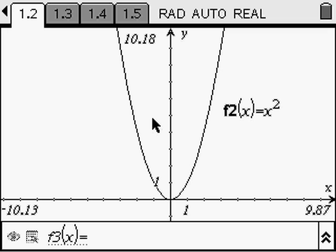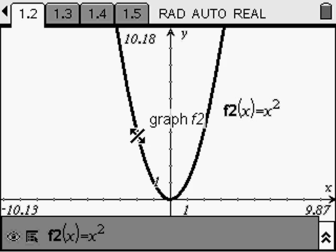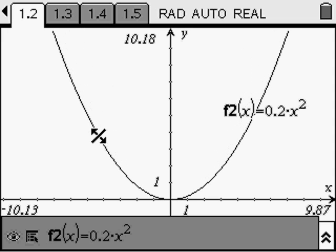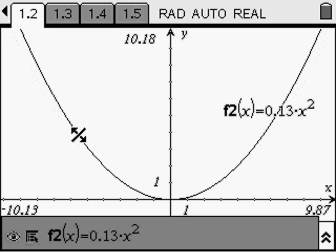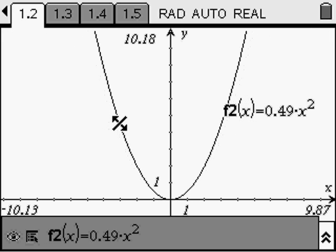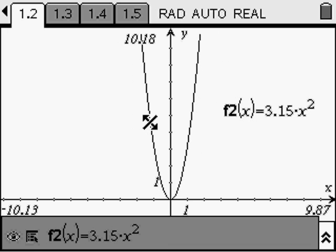One final useful activity that I believe exists only on this calculator is the ability to manipulate the function itself. Here, when I select the function, we can see how the value in front of x changes. As I make it wider, the coefficient in front of x is a real number. It is a fraction, and when I make it more narrow, we see that the value is greater than one.